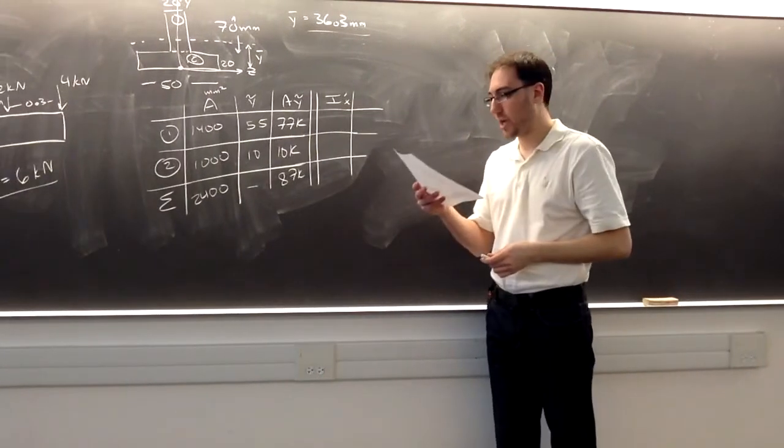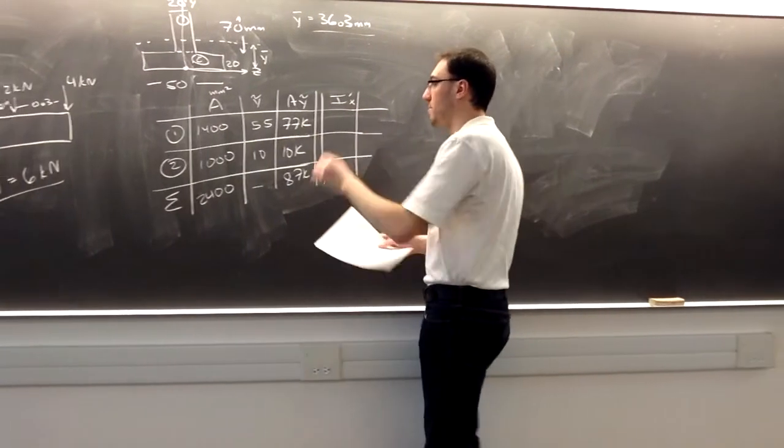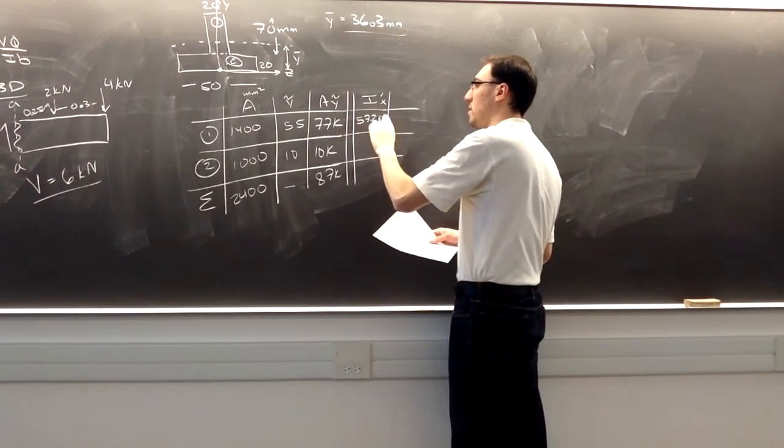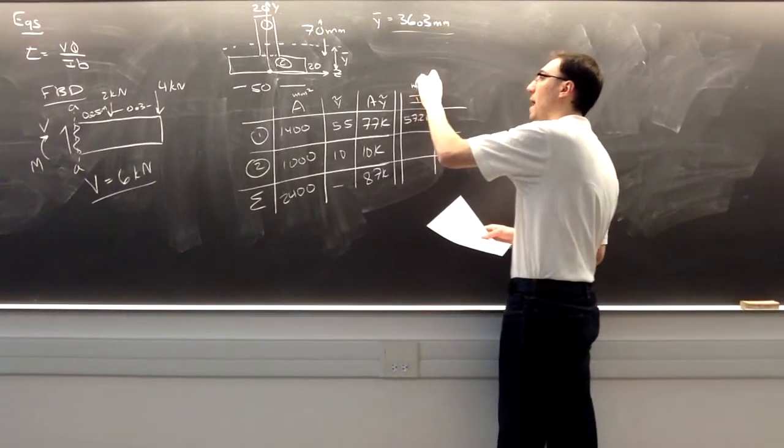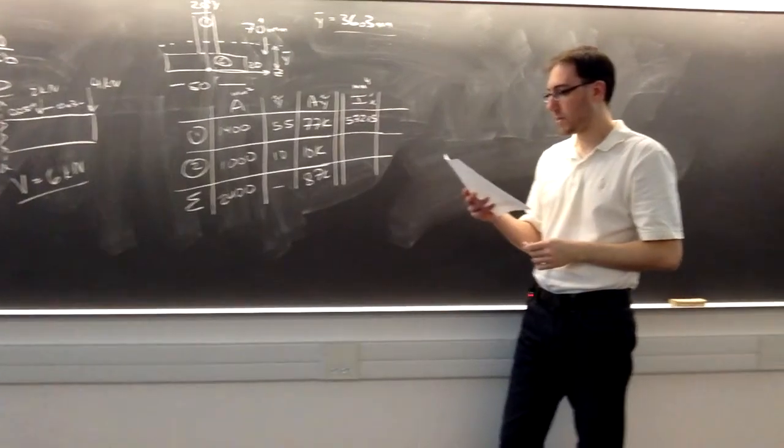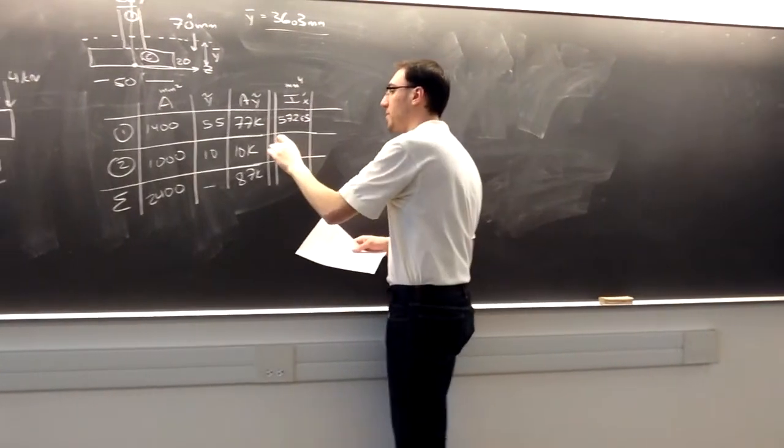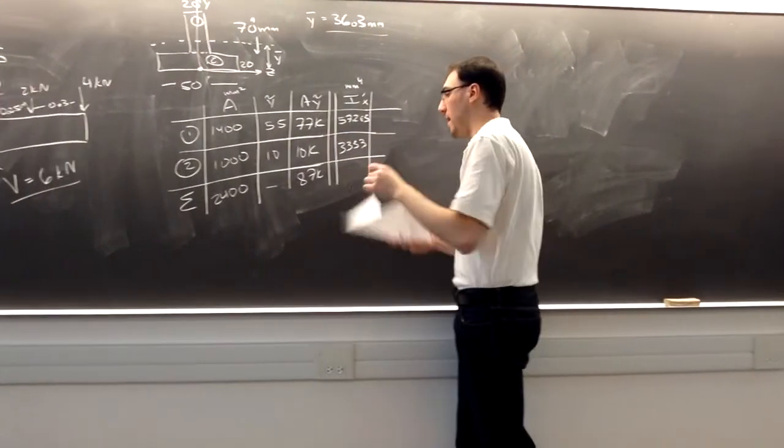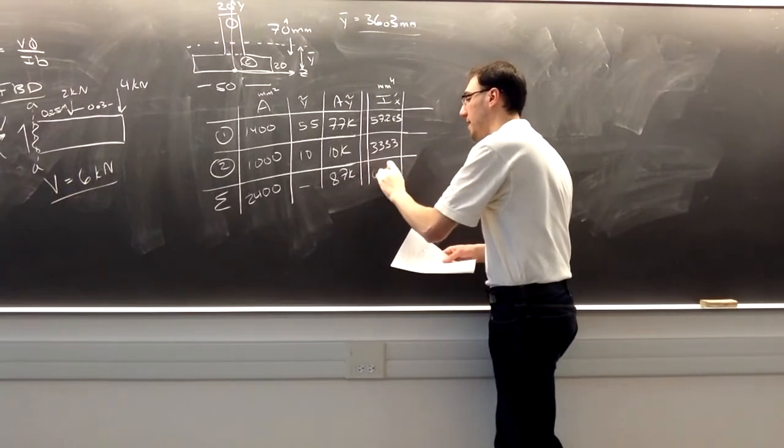Moment of inertia of shape one and shape two. Shape number one is 57.2 times 10 to the third. This is in millimeters to the fourth power. Shape number two is 3,333. And their sum is about 60.5 times 10 to the third.